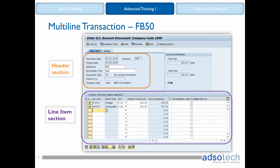When we say multiline or loop, what we mean is documents with line items — something like an invoice, a sales order, or a GL posting. In SAP this usually means a transaction where we have the list of items and a header section above. What we want to achieve is a script that can handle any number of line items per document, whether that is two line items for this document and 25 for the next.